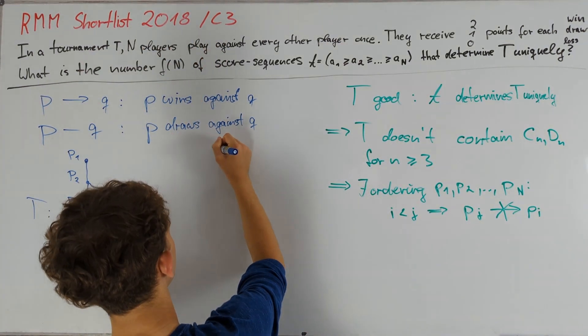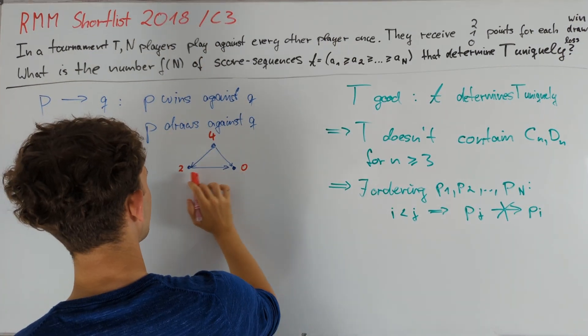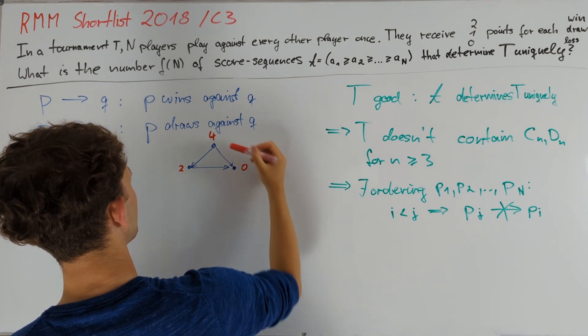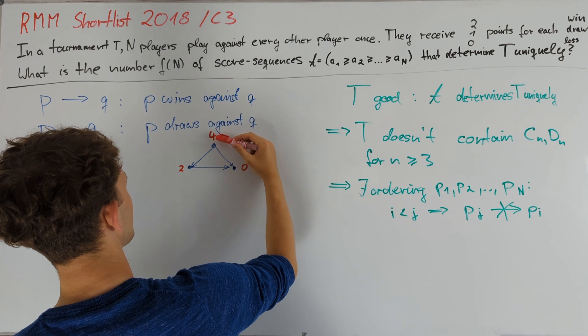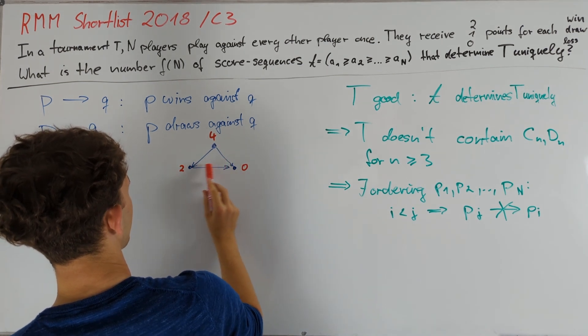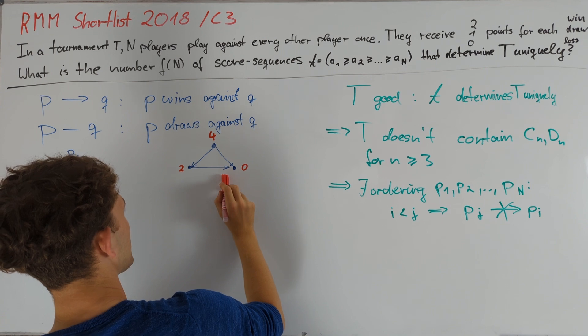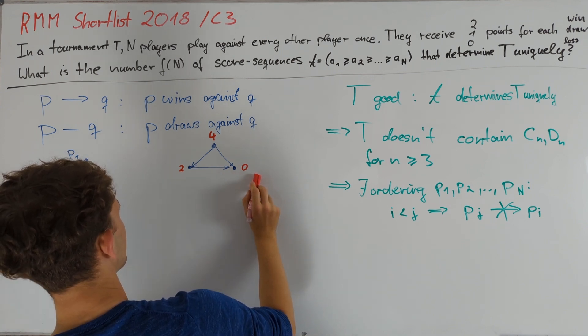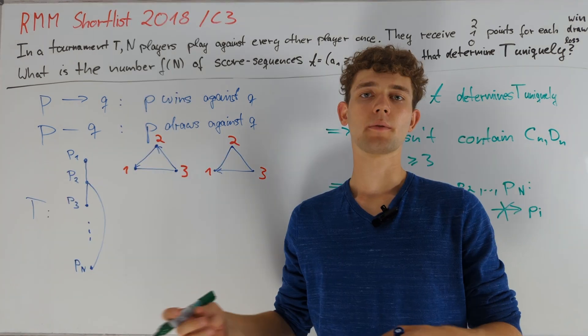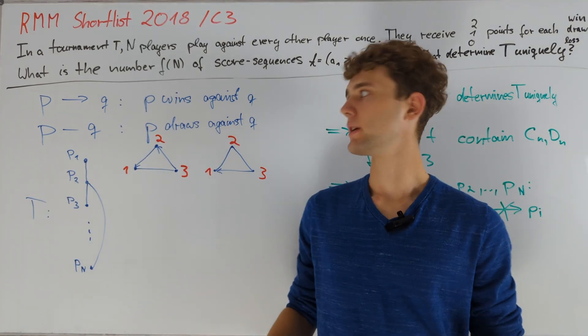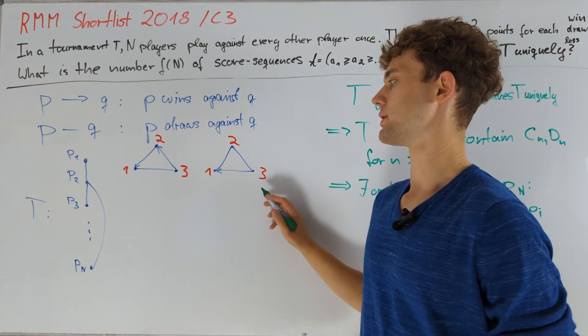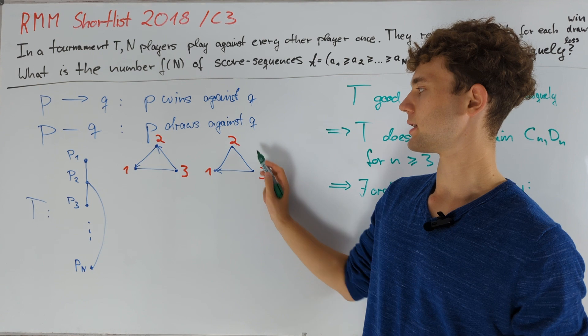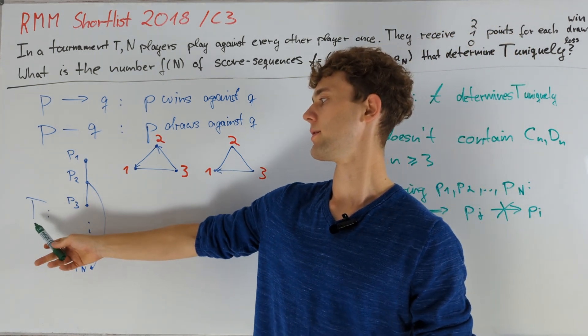Let's start with considering tournaments on just three vertices. If we want this tournament to yield the same score sequence as another one on three vertices, we can't have anybody getting four points because this already determines these two edges and then the last one is also determined. In the same way, nobody can lose both his matches, and so let's now consider all other complete tournaments on three vertices. We have already dealt with the cases C3 and D3, and therefore these tournaments are the only possible ones remaining. Indeed, these two tournaments are distinct but have the same score sequences, and therefore T can't contain either of them.